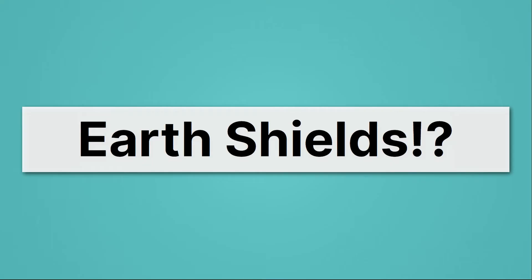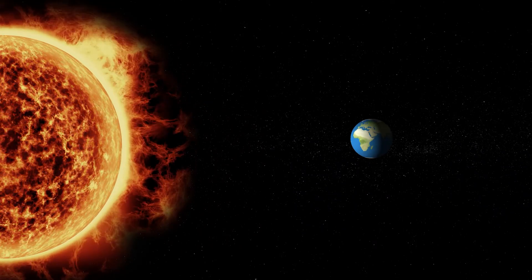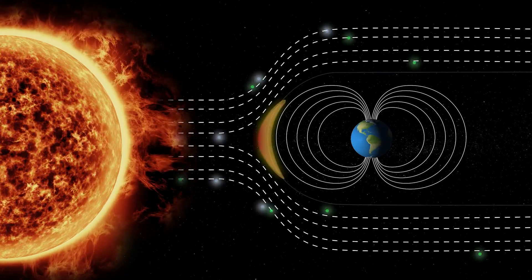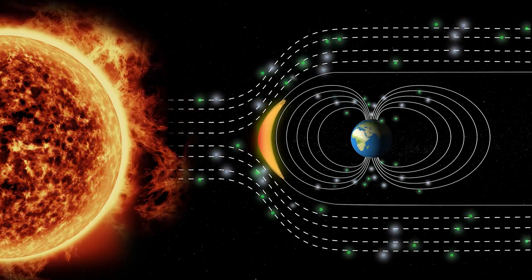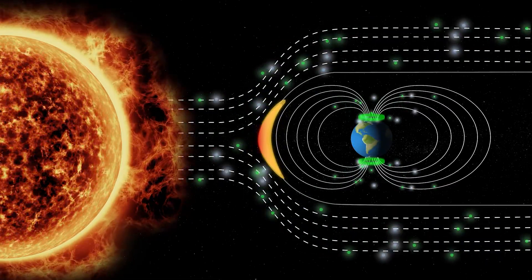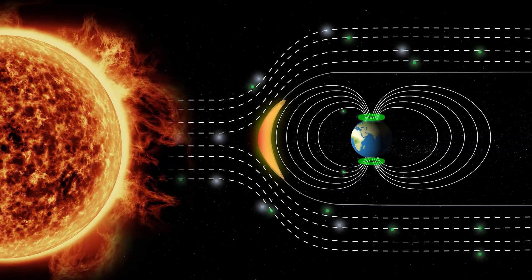We'll also be talking about earth shields. That's right, earth shields. Here we see the sun and the earth, which turns out to have a magnetic field. This magnetic field protects the earth from the dangerous solar winds full of cancer-causing radiation. Thanks, magnetic fields.